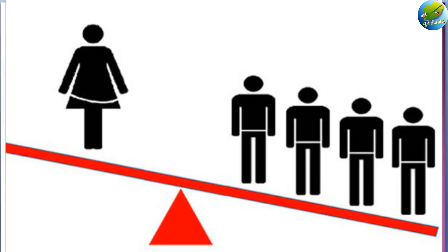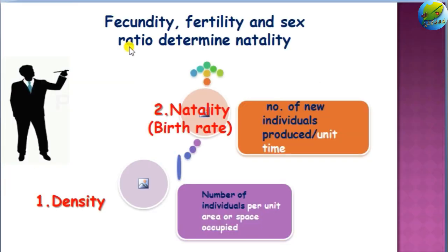Sex ratio means the ratio between the males and females of the emerged young ones. At the core, the rate at which new individuals are added to the population by reproduction is called natality or birth rate. We can note that natality is about time, and density is about the space occupied.